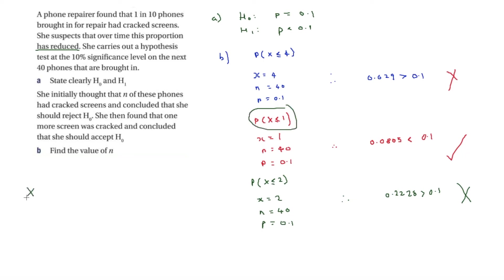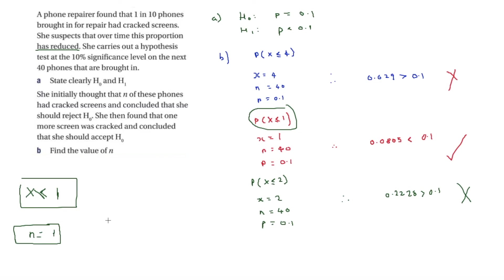Our critical region is x ≤ 1. Since she initially rejected H0, N = 1. She then found one more cracked screen, making it 2 — and since P(X ≤ 2) = 0.2228 is greater than the significance level, she accepts H0. So N = 1. Thank you for watching, see you soon.